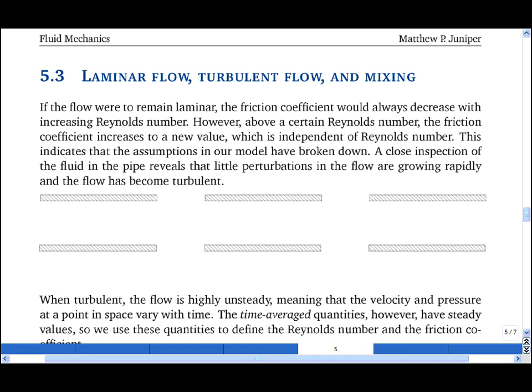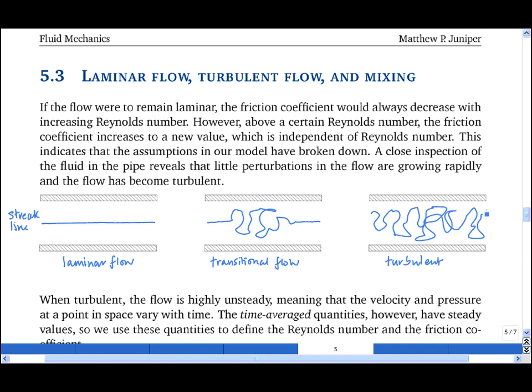If we inject a layer of blue dye into the pipe, then the streak line we see in laminar flow looks like this. As we increase the Reynolds number, we see the streak line occasionally looks something like this, in that we get small bursts of turbulent flow interspersed with moments of laminar flow, and this is known as transitional flow. If we increase the Reynolds number further, then the flow becomes permanently turbulent, and the streak line looks something like that.